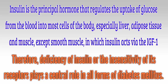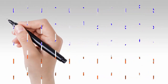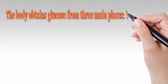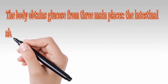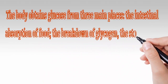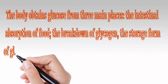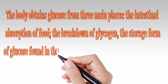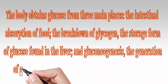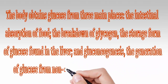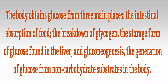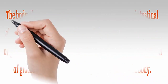The body obtains glucose from three main places: the intestinal absorption of food, the breakdown of glycogen — the storage form of glucose found in the liver — and gluconeogenesis, the generation of glucose from non-carbohydrate substrates in the body.